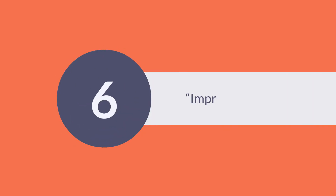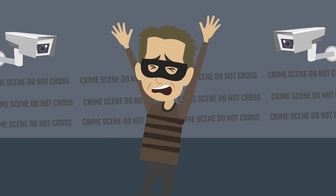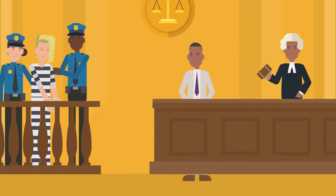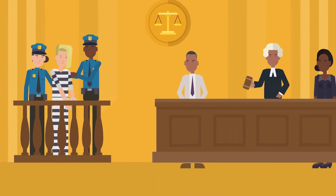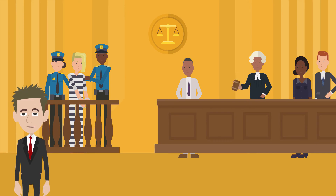The sixth type of punishment is imprisonment — the most serious punishment, as you will lose your liberty from anywhere between one day up to the rest of your life. A sentence of less than two years is served in a provincial correctional institution. However, if your sentence is two years or more, it will be served in a federal penitentiary.